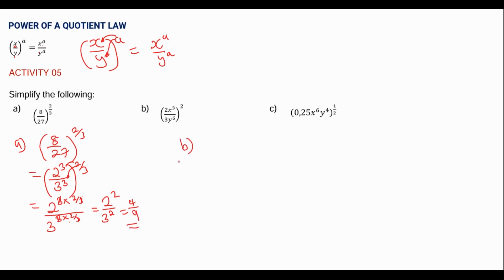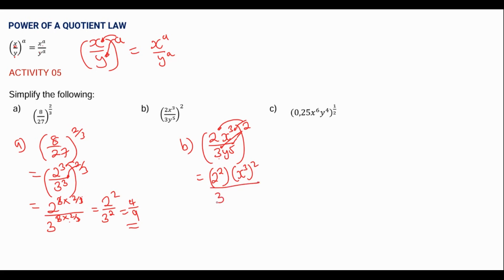Now we do part b. We have 2x cubed over 3y to the power 5, all to the power 2. We're distributing this exponent 2 to each factor in the numerator and denominator. It becomes 2 to the power 2, x cubed to the power 2, over 3 to the power 2, y to the power 5 to the power 2. Then 2 squared is 4, and raising a power to a power we multiply the exponents: x to the power 6, over 9, then y to the power 10.